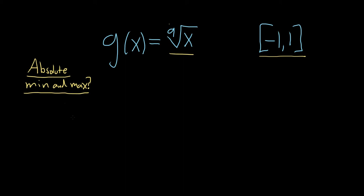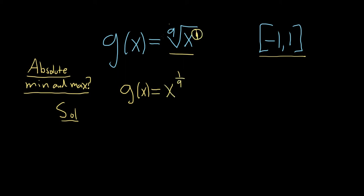So let's go ahead and go through it very, very carefully. The first thing we want to do is rewrite this function in a nicer way that lets us differentiate it. There is a 1 here, so we can write g of x as follows: g of x is equal to x to the 1 over 9. It's always this number over this number.